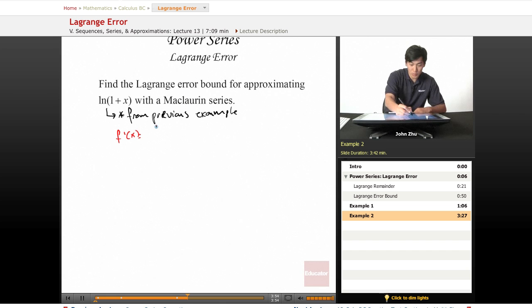f'(x) = 1/(1+x), and f''(x) = -1/(1+x)². f'''(x) = 2/(1+x)³, and what we're doing here is simply using the quotient rule, just like before.